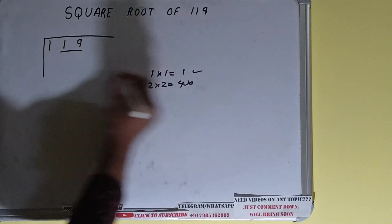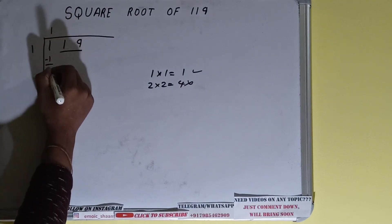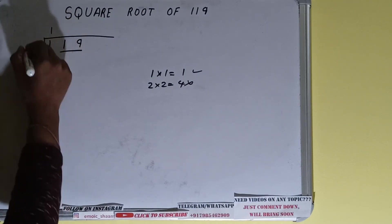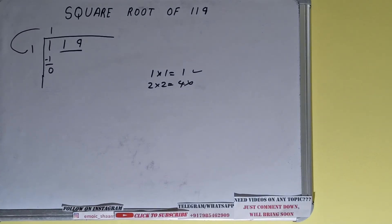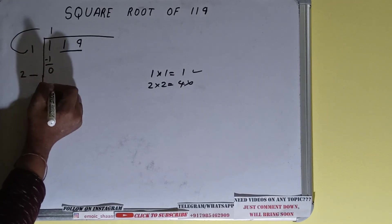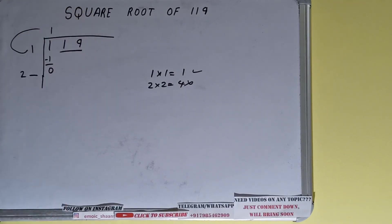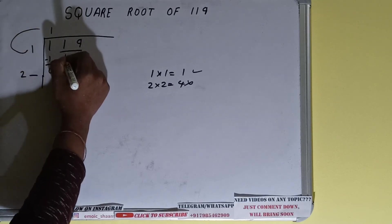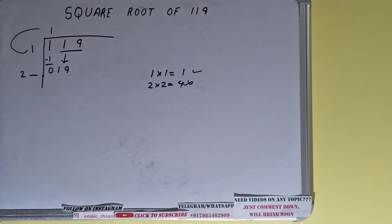So we go with 1 — one here and one here. Subtract and we're left with zero. Now take your divisor and add it with what you multiplied with: 1 plus 1 equals 2. Keep one extra digit space, and bring the next pair down — it becomes 19.